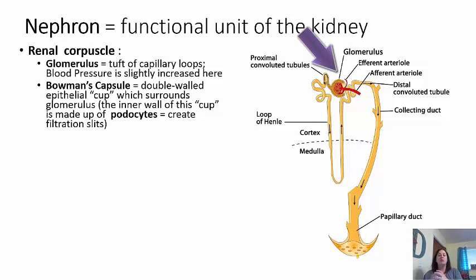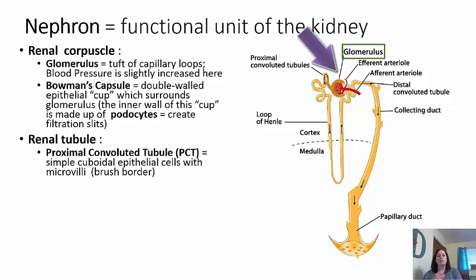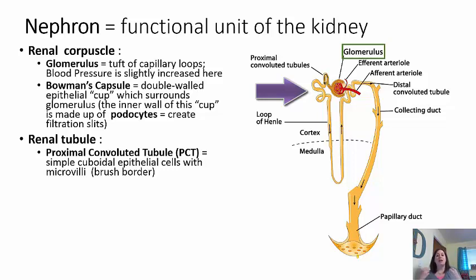Most of what's pulled out here is fluid, proteins, and smaller ions. Red blood cells are not allowed to leave unless there is damage to the structure. Then we have the renal tubule — the proximal convoluted tubule, abbreviated PCT. This is made of simple cuboidal epithelial cells with microvilli called a brush border. These constantly comb through what's come in, identifying what is waste and what needs to be returned to the blood, because sometimes things we need get pulled into this urine and we want to recover them.